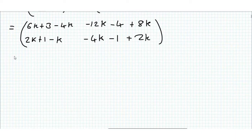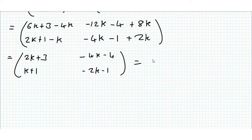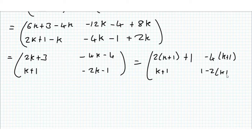And simplifying this, we get (2k+3, -4k-4; k+1, -2k-1). And this is equal to (2(k+1)+1, -4(k+1); k+1, 1-2(k+1)).